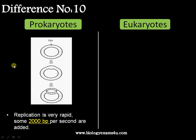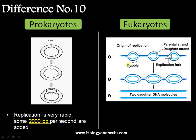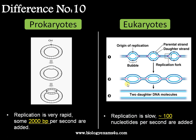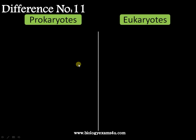Difference number ten: prokaryotic DNA replication is very fast — approximately 2,000 base pairs per second — as the genome size is small and, being a single-celled organism, a mutation may not affect it as much. In eukaryotes it is comparatively slow — about 100 nucleotides per second — but remember, the large genome is handled by many ORIs and replicons working together simultaneously to copy all the DNA.